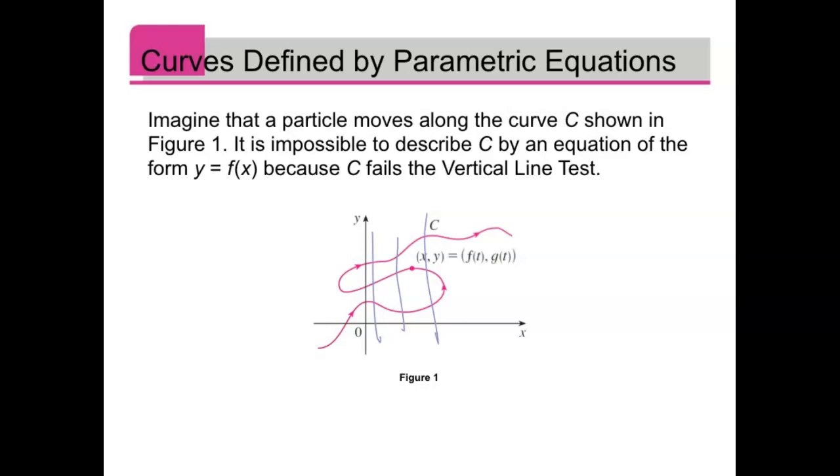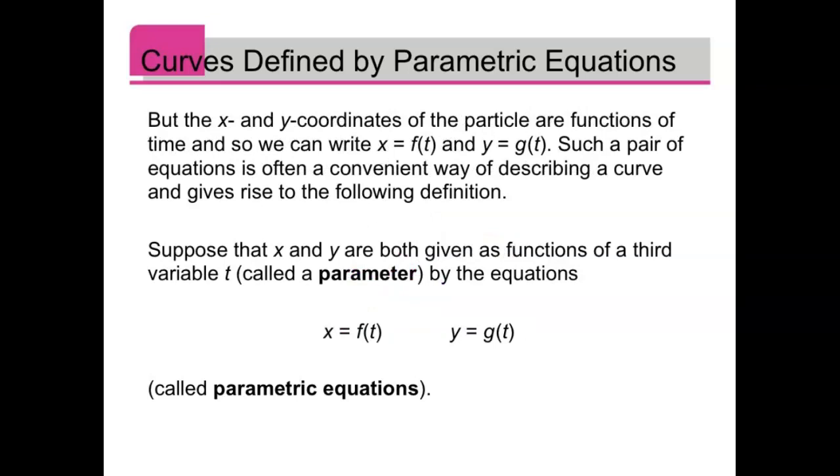So the way we can define this is instead come up with a third variable, what we're going to call a parameter. We define x as its own function of t, y as a different function of t. We call t that third variable, the parameter. These two separately are called parametric equations. This allows us to create curves that don't have to pass the vertical line test. They can overlap themselves.